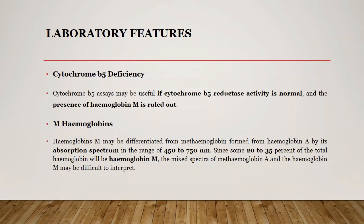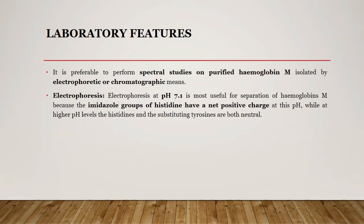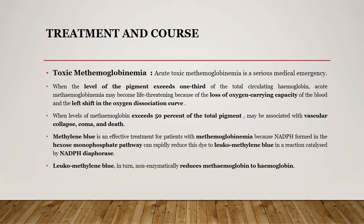In cases of hemoglobin M, it may be differentiated from methemoglobin by absorption spectrum in the range of 450 to 750 nanometers. Since 20 to 35 percent of total hemoglobin is converted to hemoglobin M, we get a mixed spectra of both methemoglobin A and hemoglobin M, making it difficult to interpret. It is therefore preferable to perform a spectral study on purified hemoglobin M, extracted by electrophoretic or chromatographic means. Electrophoresis is generally performed at pH 7.1, at which the imidazole group of histidine has a net positive charge, making it easier to separate hemoglobin M.